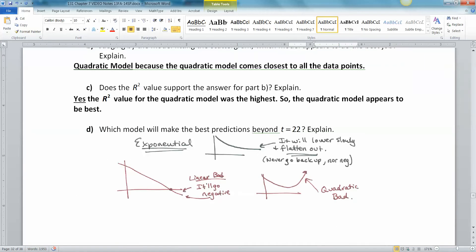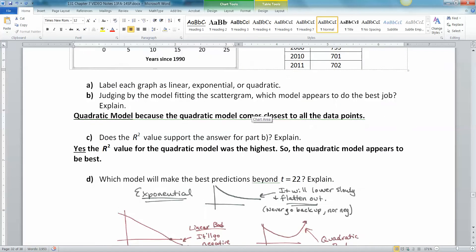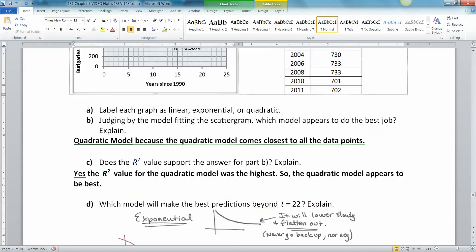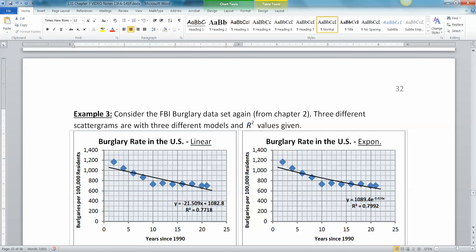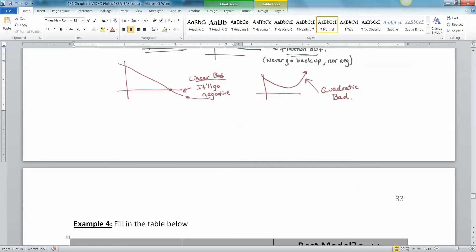But that's what a quadratic model would do. A quadratic model would curve back up and make a U shape, which means the burglary rate would start climbing again, but we don't have any evidence for that. Even though the quadratic model fit the data points best, it's not best for making predictions. Similarly, the linear model is terrible because when you draw a line like this, it's going to hit the x axis and from that point on you're going to have negative values, which is impossible. So the exponential model is actually the best one for predictions.